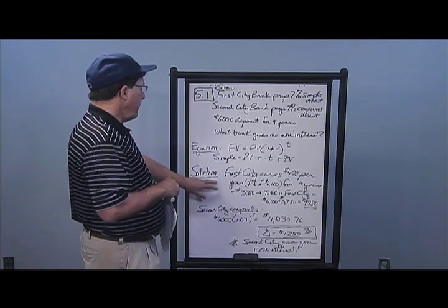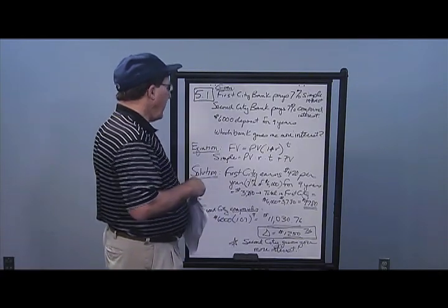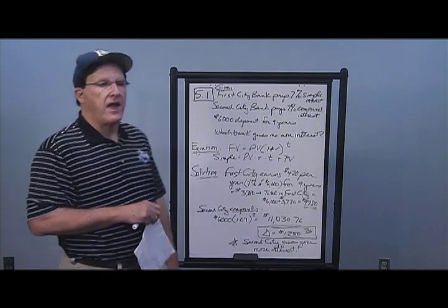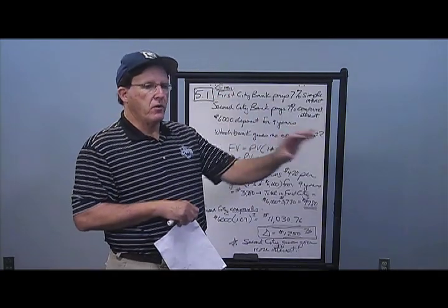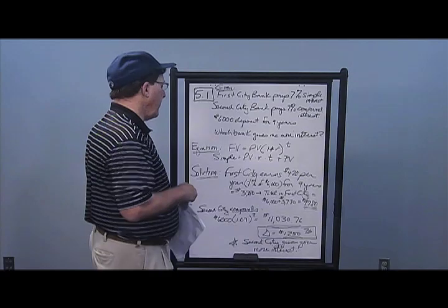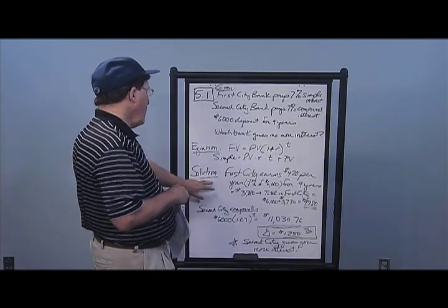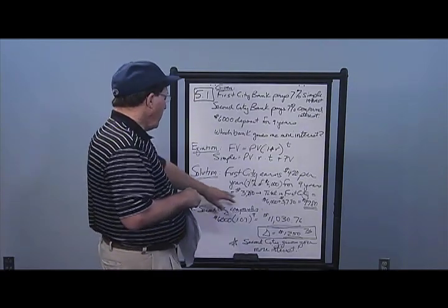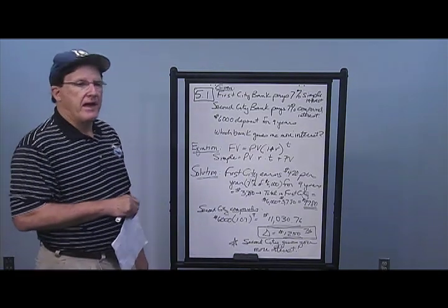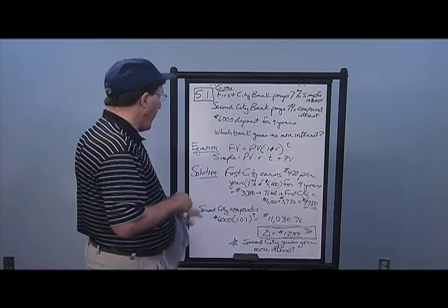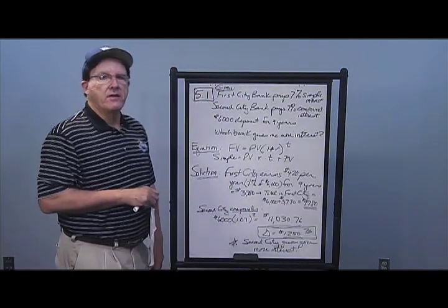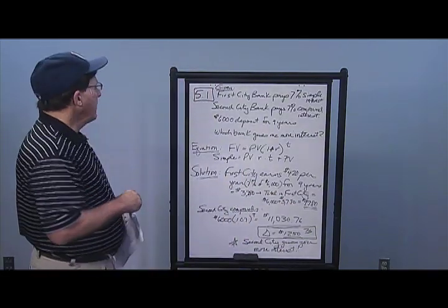To solve for First Citibank, I earn $420 a year, which is 7% interest on $6,000. I get $420 each year for nine years — just the interest on the principal — for a total of $3,780. So my total in the bank after nine years will be $6,000 plus $3,780, or $9,780.